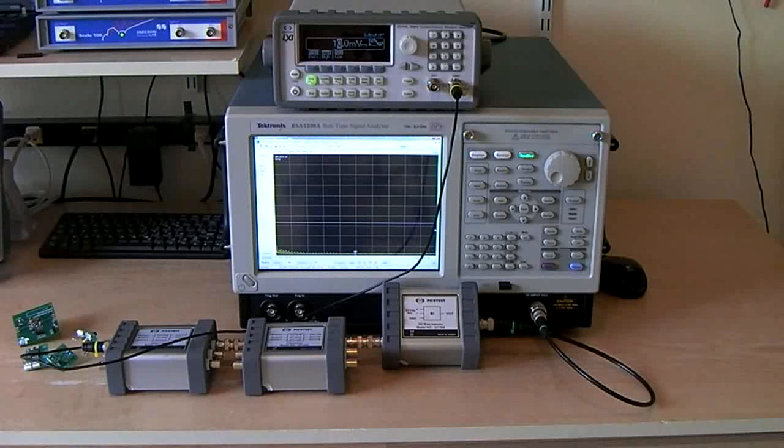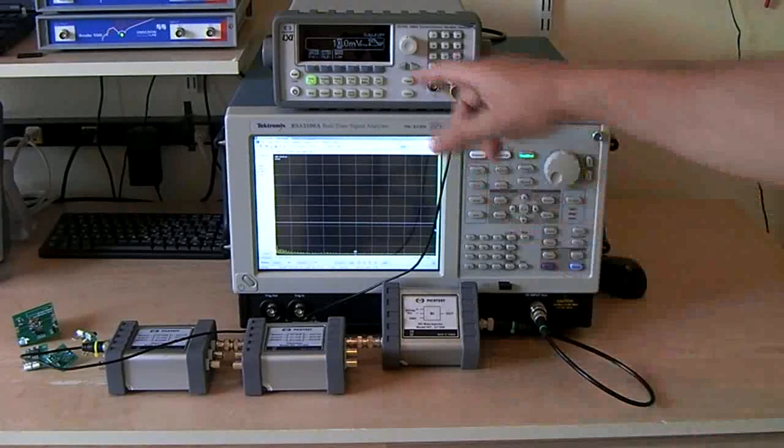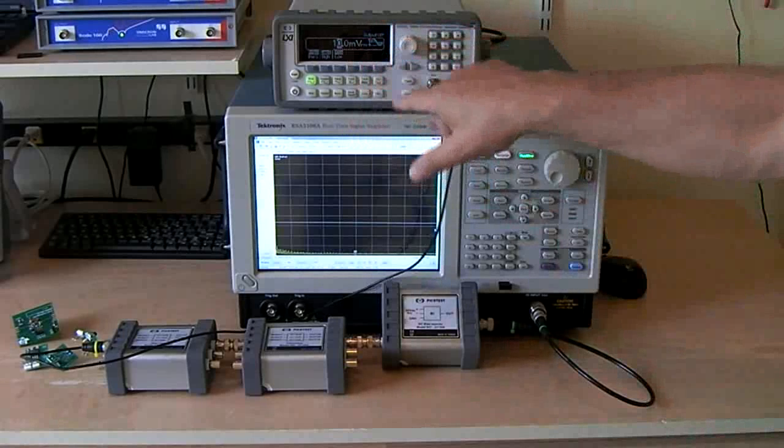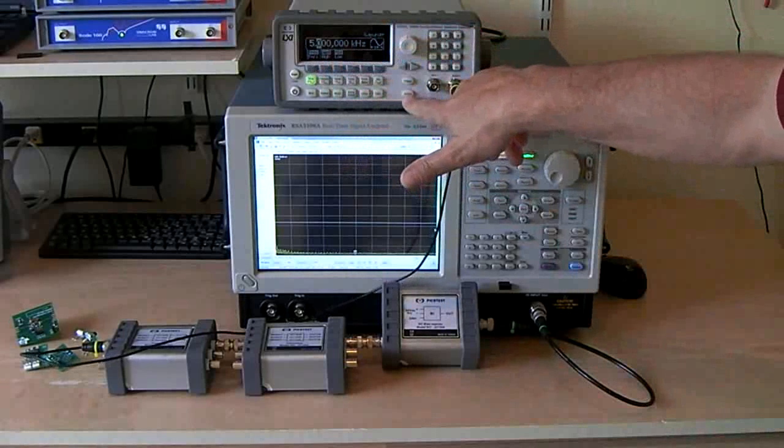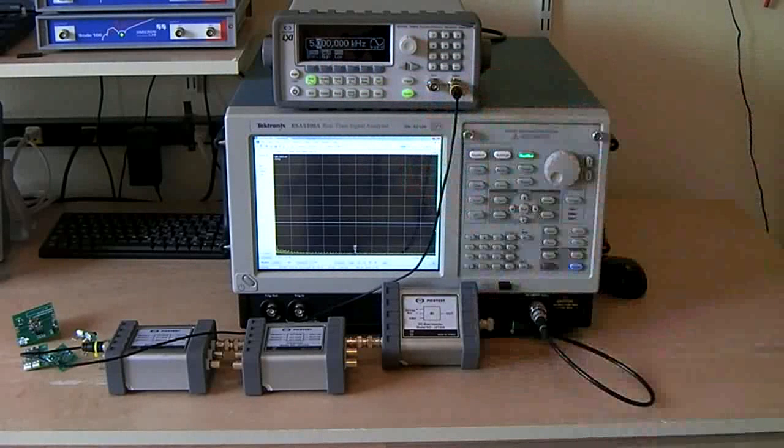Before we can actually make measurements, we need to validate that noise floor, and so we're going to add our own signal at 10 mV RMS at a frequency of 5 kHz, so that we can see it on the screen.